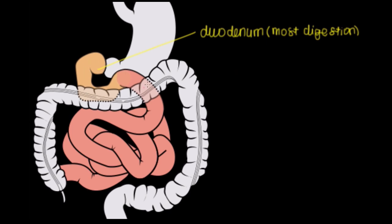Alright, so the next part of the small intestine is called the jejunum. And this is the part of the entire GI tract where the most absorption occurs anywhere. So the most absorption of nutrients is going to happen in your jejunum.